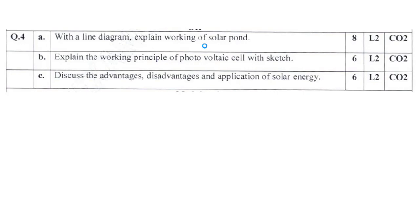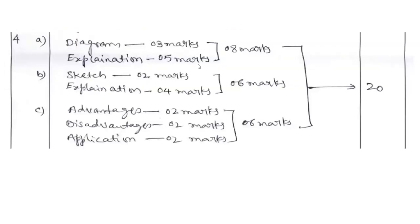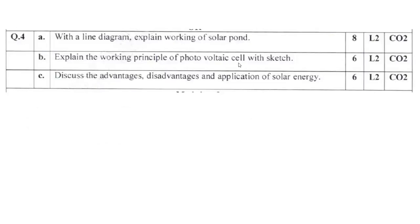Question 4A: with line diagram explain working of solar pond. Diagram 3 marks, explanation 5 marks, total 8 marks. Explain working principle of photovoltaic cell with neat sketch. Elaborate with different layers: P layer, N layer forming P-N junction, substrate, glass coating. Mention different materials used for solar PV cells and how you generate electricity. Explain photoelectric effect and photovoltaic effect. 6 marks.